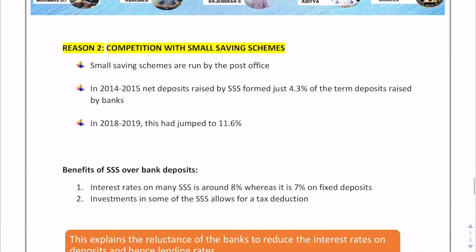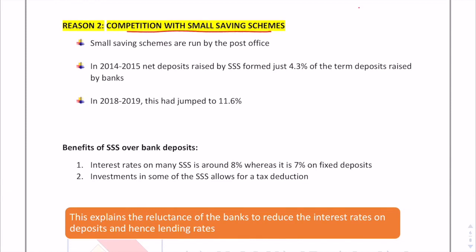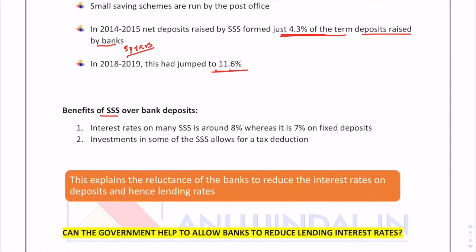The second reason is very important and interesting. Small savings schemes (SSS) are run by the post office. Over a time span of five years, small savings schemes which formed just 4.3 percent of the term deposits raised by banks have now grown to 11.6 percent — creating tough competition. People are choosing small savings schemes over bank deposits because the interest rates on SSS deposits are around 8 percent, whereas it is just 7 percent on fixed deposits of banks.